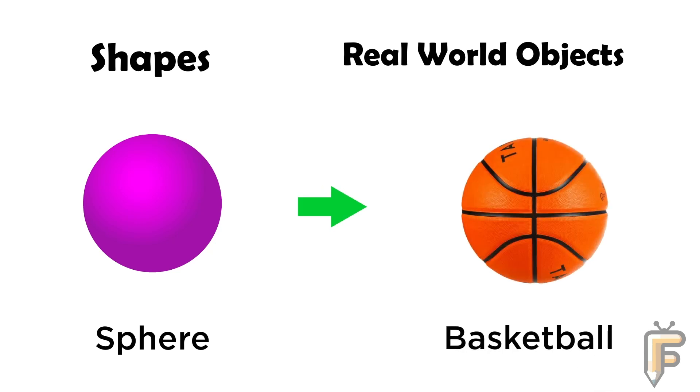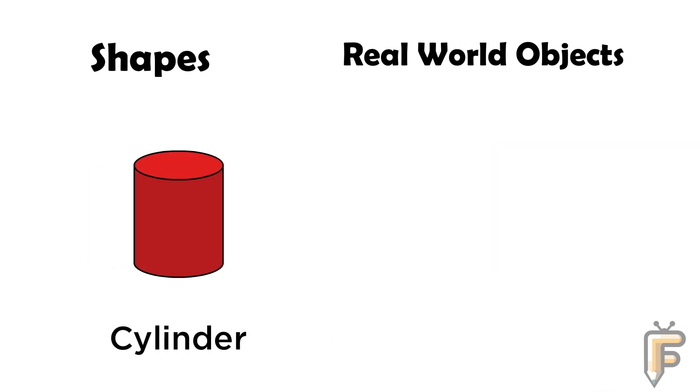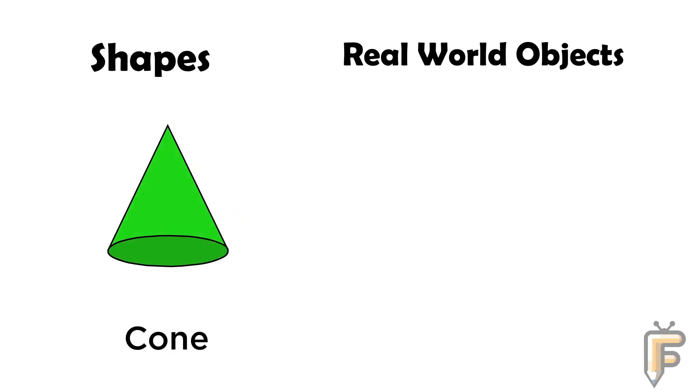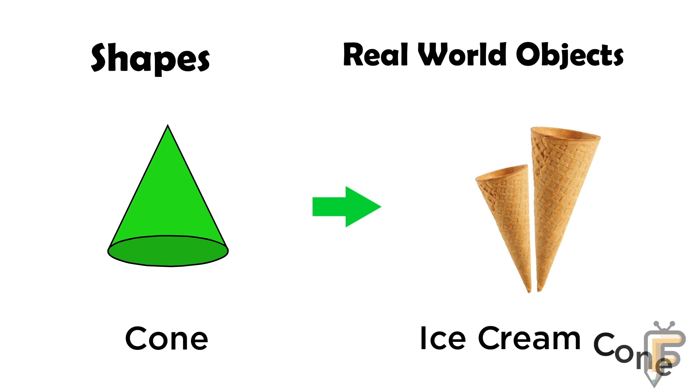Cylinder: soda can is cylinder shape. Cone: ice cream cone.